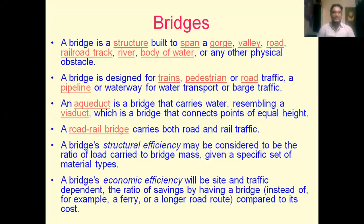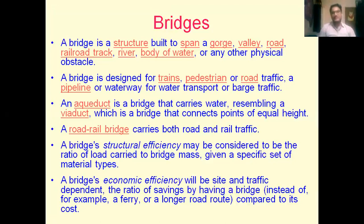Now moving to bridges. A bridge is a structure built to span a gorge, valley, road, railway track, river, or body of water. A bridge is constructed at a certain elevated height going across a valley, road, river, or railway track. We define bridges as ROB — which stands for Railway Overbridge, River Overbridge, or Road Overbridge.